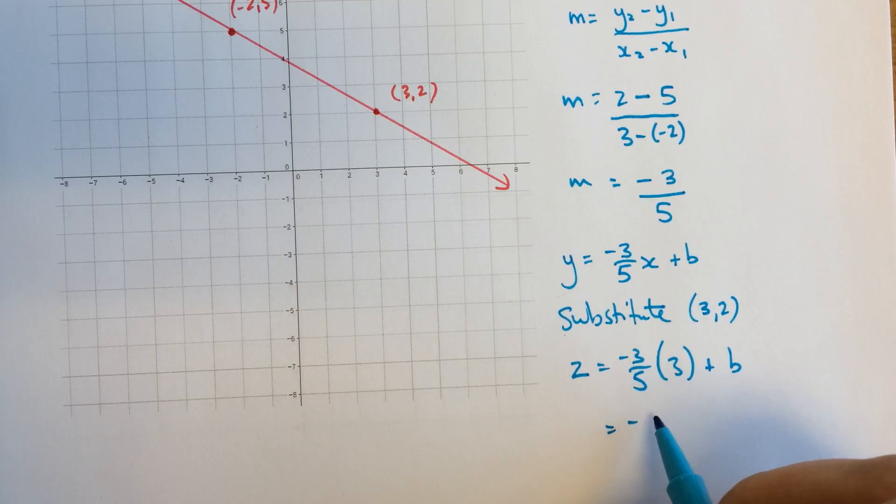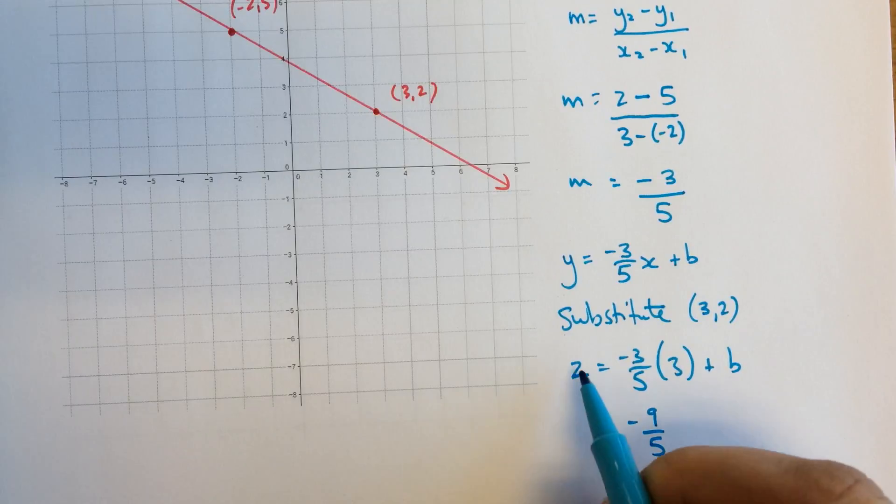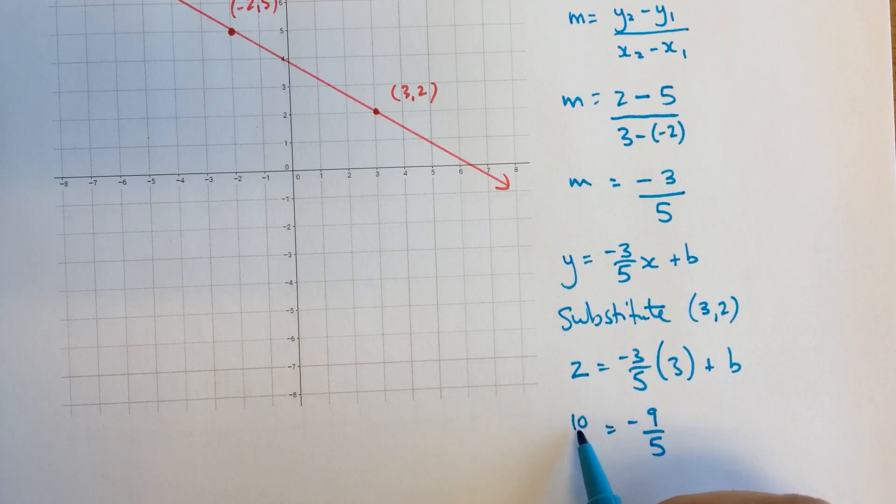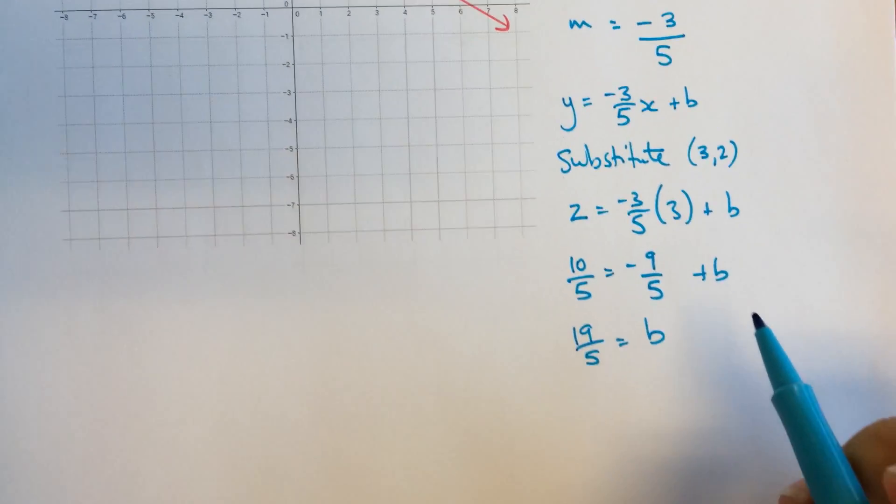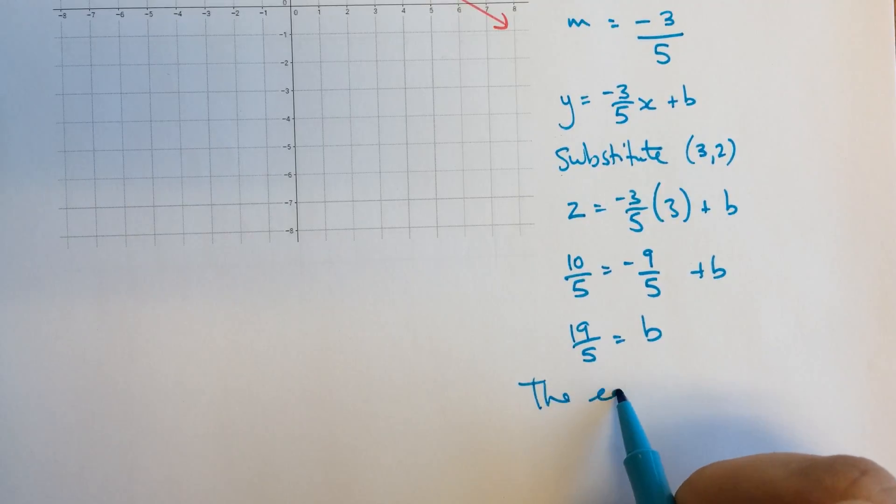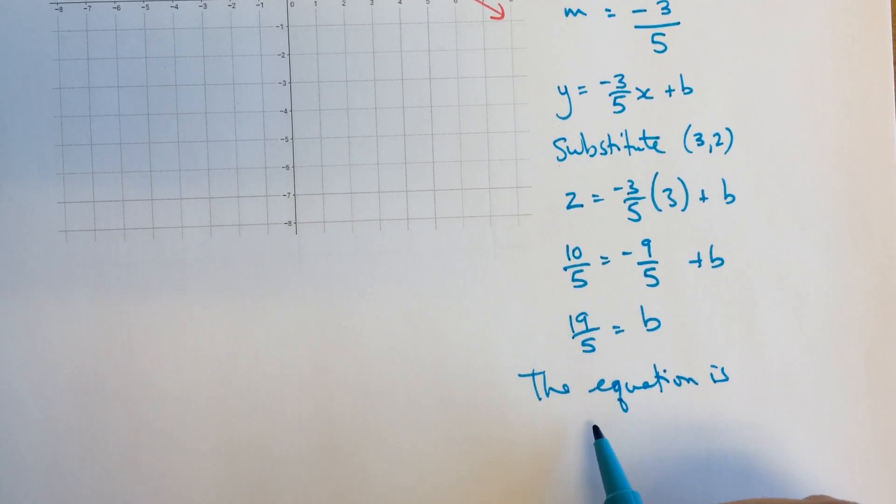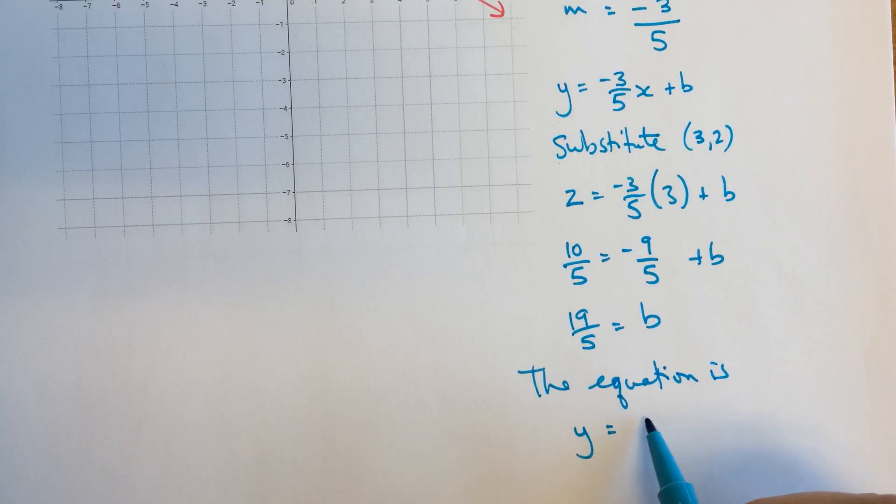Let's see. This is going to be negative 9 fifths over here. So I'm going to rewrite my 2 as some number of fifths. That'll be 10 fifths. So 2 is 10 fifths. Negative 3 times 3 is 9. Negative 9. And that's in fifths. And I have b over here. Adding 9 fifths to both sides, I'll get 19 fifths. And over this side, I'll get b. So the final equation is y equals negative 3 fifths x plus 19 fifths. Thanks.